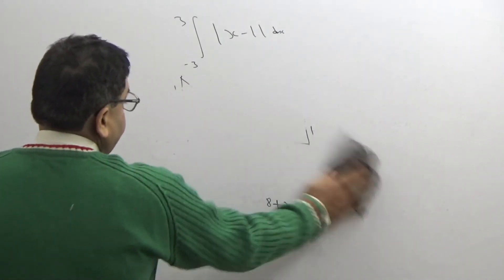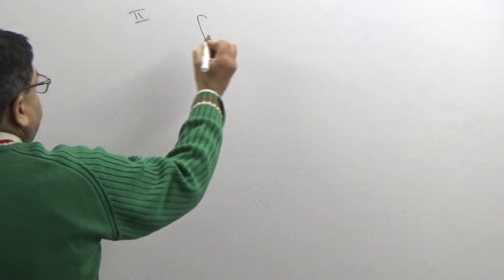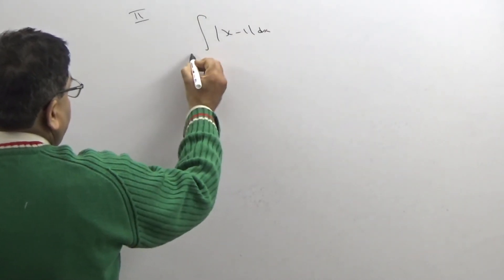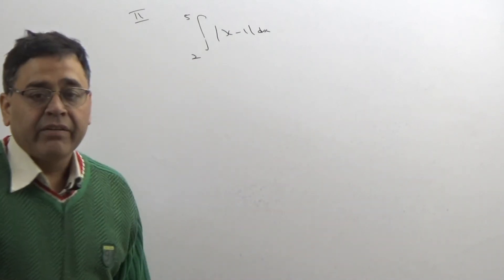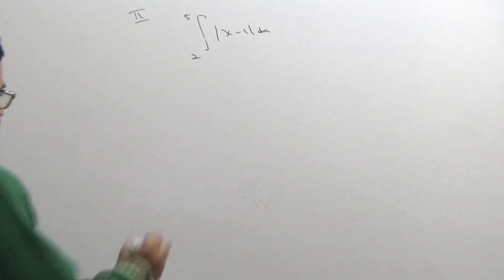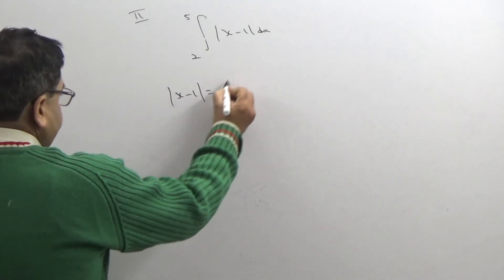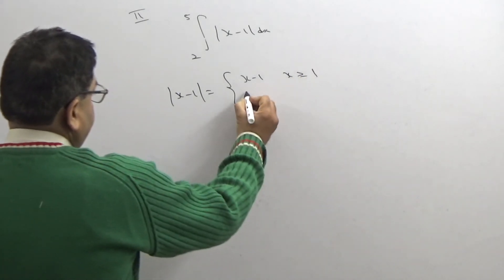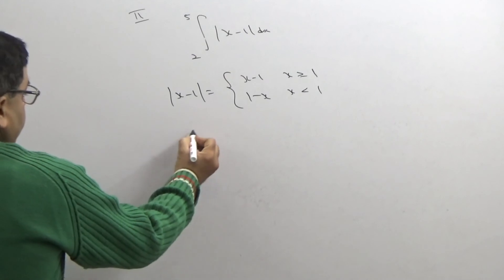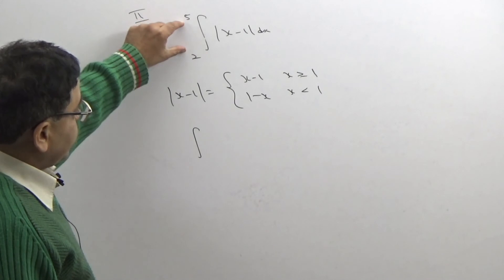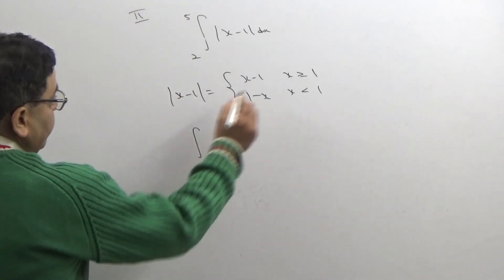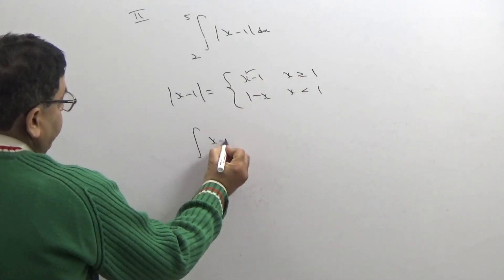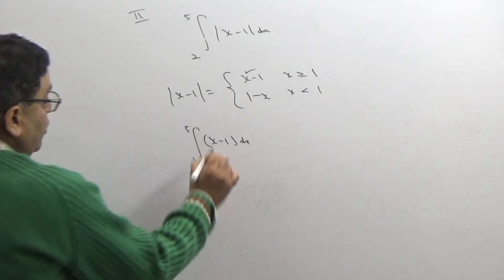Now I am taking another type — this is a second type in the modulus function. Suppose we are given ∫₂⁵ |x−1| dx. First I will do it by our traditional method, then we will do our own analytical or graphical method. We define |x−1| as (x−1) when x ≥ 1, and (1−x) when x < 1. Notice that in the previous problem the critical point was between the two limits, but here the critical point 1 is to the left of the limits 2 to 5.